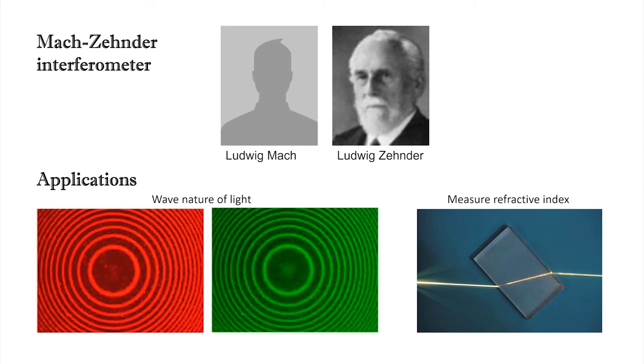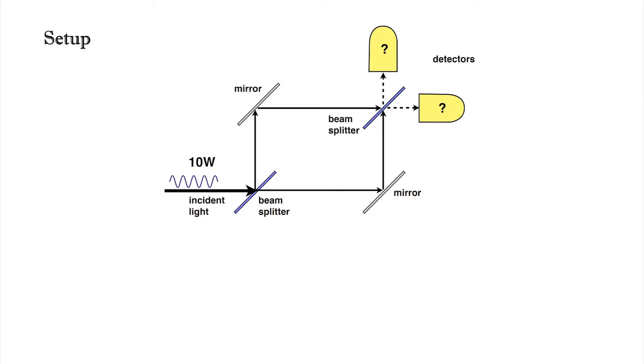These interferometers can be used to demonstrate the wave nature of light and are a useful tool to measure the refractive indices of transparent objects. A simple Mach-Zehnder interferometer consists of four vital elements.